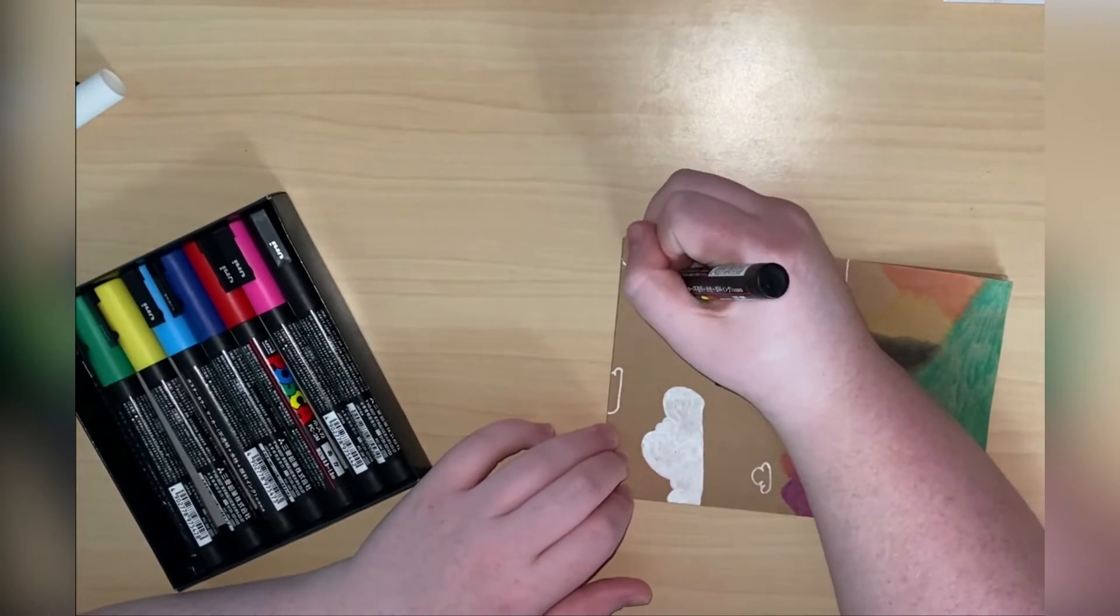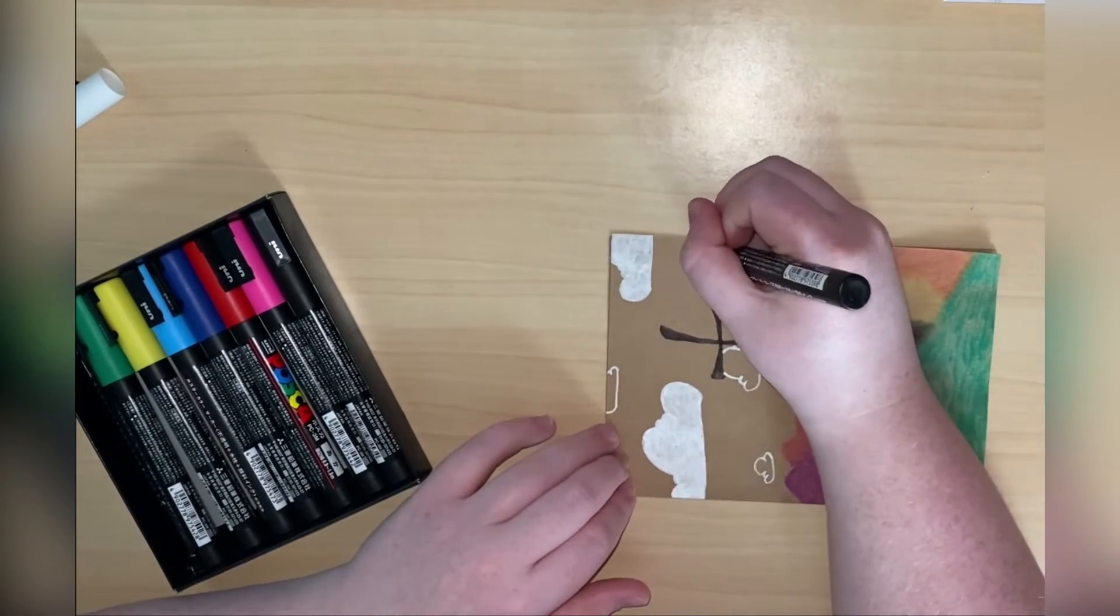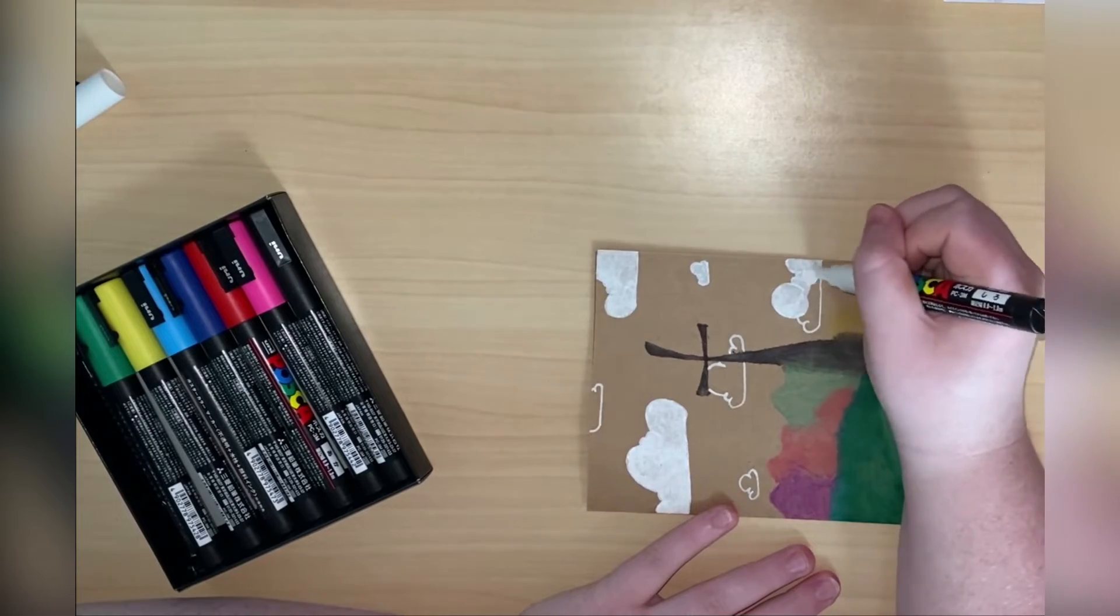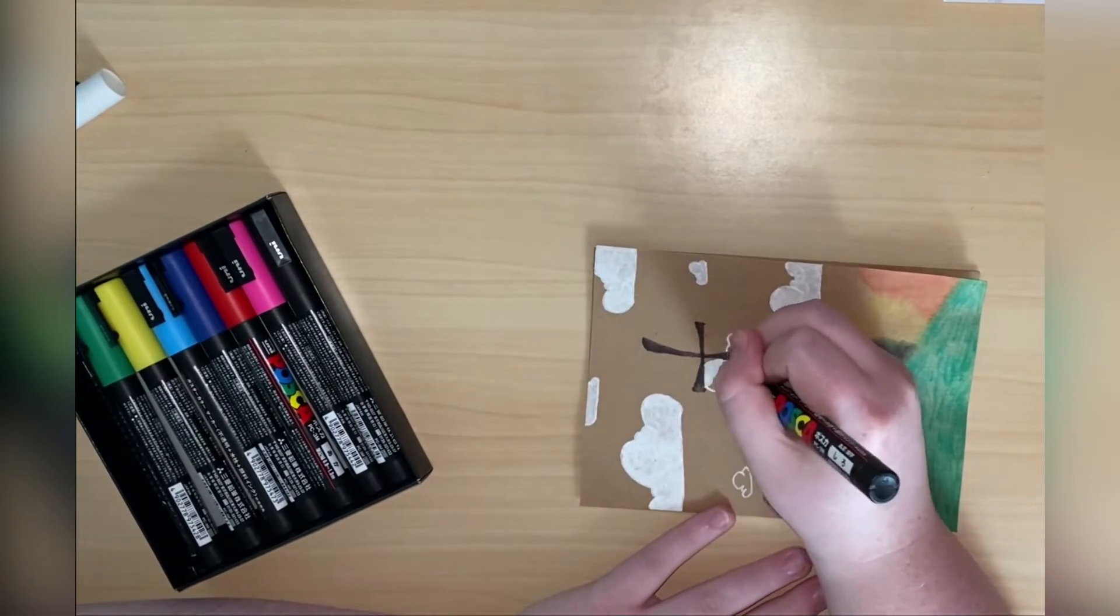At this point, I was trying to decide whether I wanted to color the sky or not. I was thinking I could do a lighter color with the Poscas, but I decided not to. At the end, I really liked the way that it turned out.